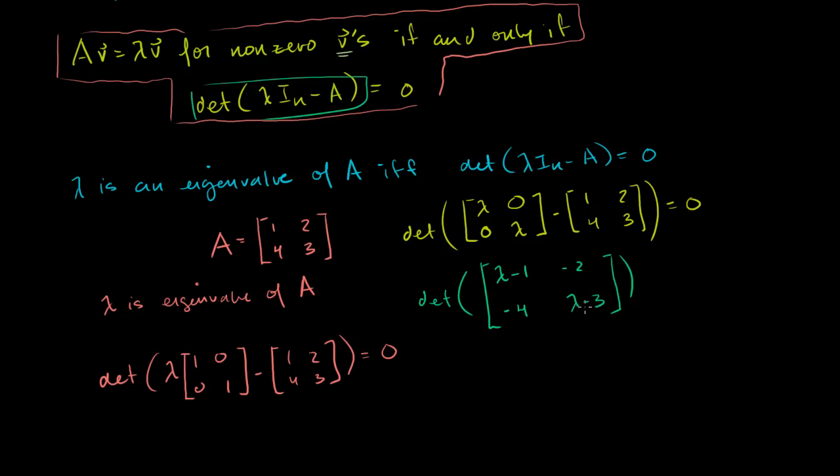So what's the determinant of this 2 by 2 matrix? Well, the determinant of this is just this times that minus this times that. So it's lambda minus 1 times lambda minus 3 minus these two guys multiplied by each other. So minus 2 times minus 4 is plus 8 minus 8. This is the determinant of this matrix right here, of this matrix right here, or this matrix right here, which simplify to that matrix. And that has got to be equal to 0.